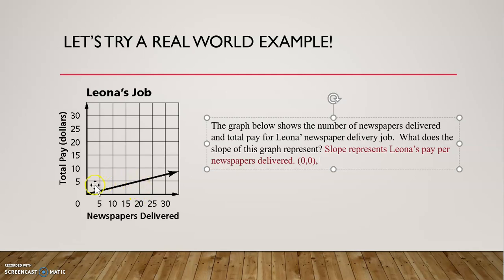What's another point on that line? Oh, when she delivers 20, she makes five bucks. So 20 and 5 is another point. Now, let's think about then slope. Remember, slope is change of y over change in x.